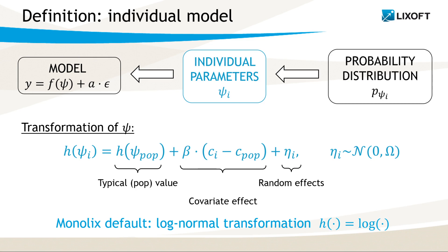Monolix by default uses a transformation, denoted here by h, of individual parameters psi. It gives a clear decomposition of individual values around a population value psi-pop, with part of the variability explained by covariates with parameters beta, and part of the variability unexplained and represented by normally distributed random effects eta_i.